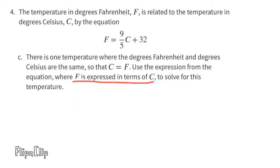Part C: There is one temperature where degrees Fahrenheit and degrees Celsius are the same, so that C equals F. Use the expression from the equation where F is expressed in terms of C to solve for this temperature. Since C equals F, I can substitute F with C. So the equation becomes C equals nine-fifths C plus 32. Since C equals F, these two equations are virtually the same. When we solve for C in this equation, we're also solving for F.